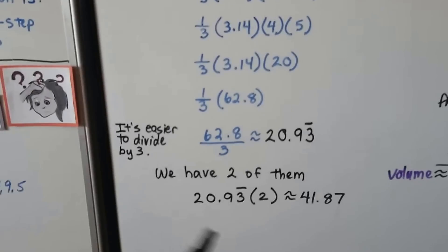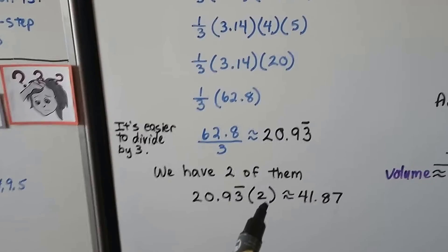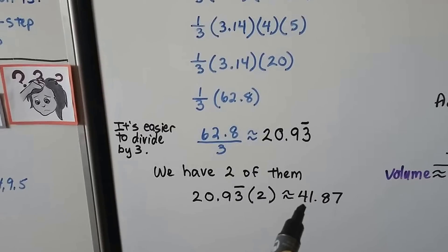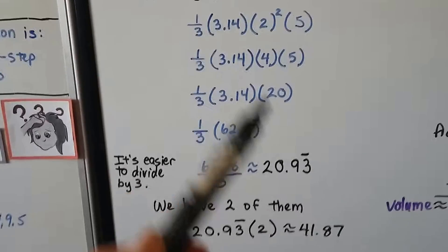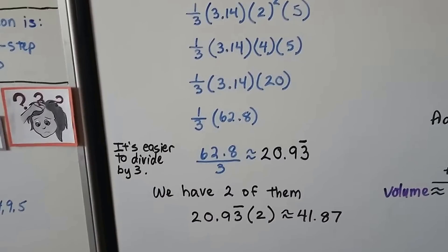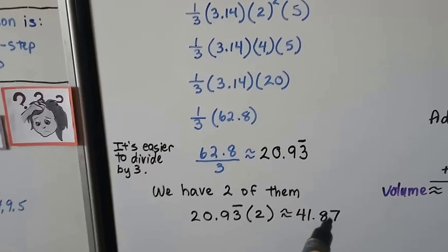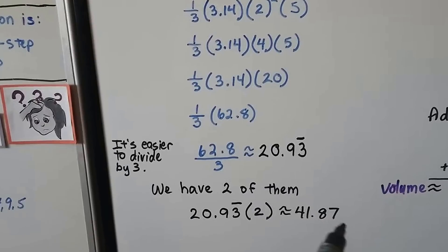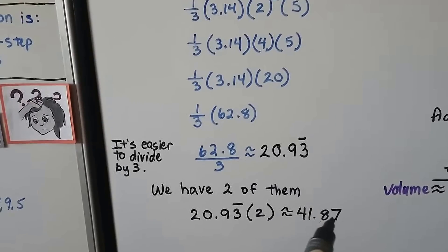Now, that's just one cone. We have two of them, so we need to multiply that by 2. It's going to give us approximately 41.87. Because we were dealing with pi, we have that approximate symbol. It was 866667. I rounded it up to 87.